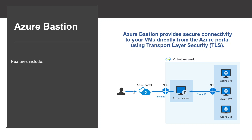Azure Bastion provides secure and seamless RDP/SSH connectivity to your virtual machine directly from the Azure portal using TLS. When you connect via Azure Bastion, your virtual machines don't need a public IP address, agent, or special client software.